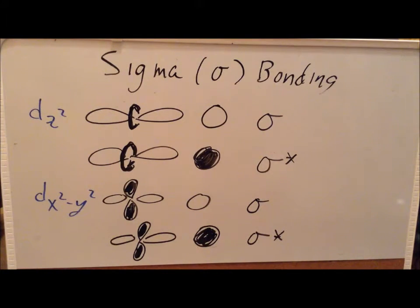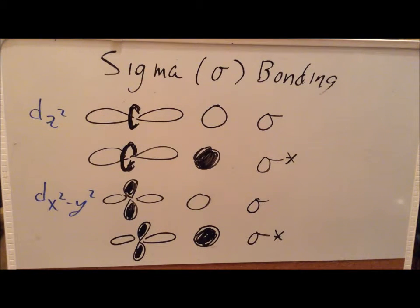Recall that dz² and dx²−y² are the two orbitals that form the eg combination when we have an octahedral complex.